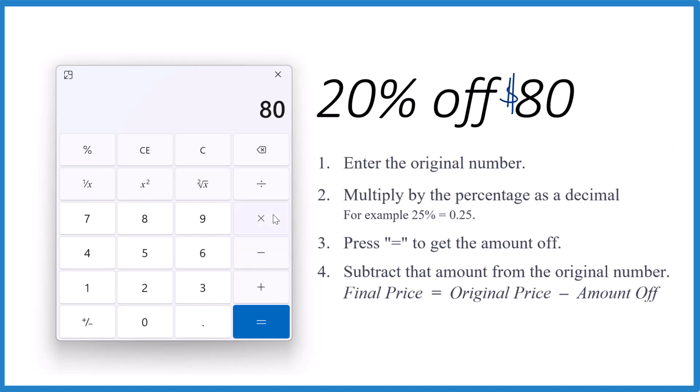So times .2, hit the equal sign, we get 16. That number there, 16, that's how much you save. That's actually 20% of $80, it's a portion of $80, it's 20% of 80. So that's $16.